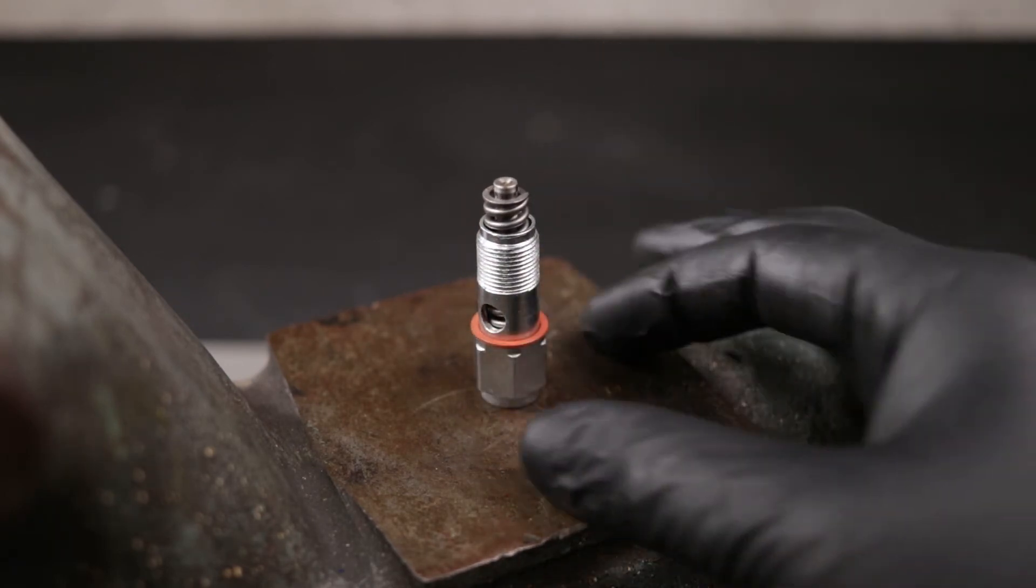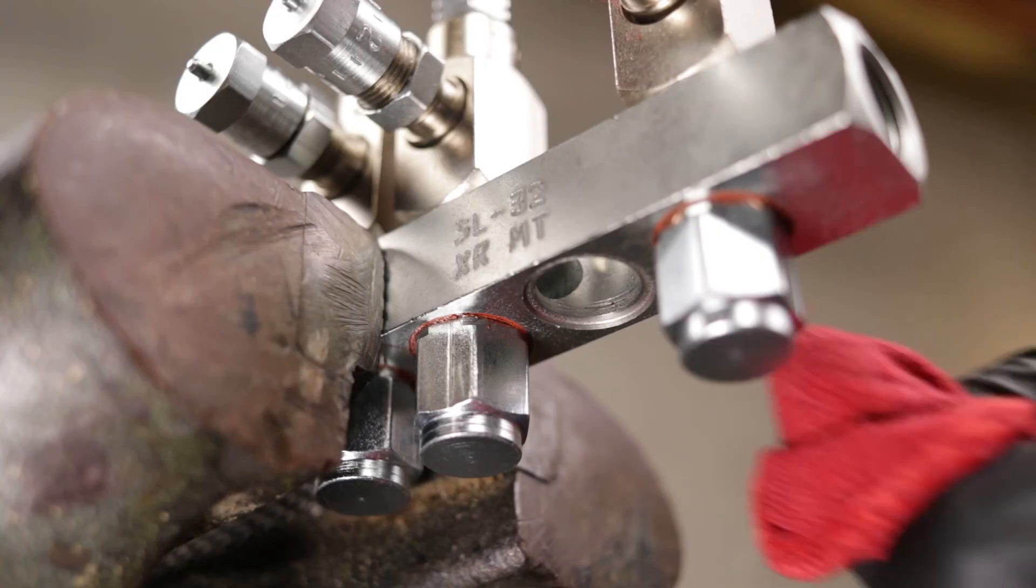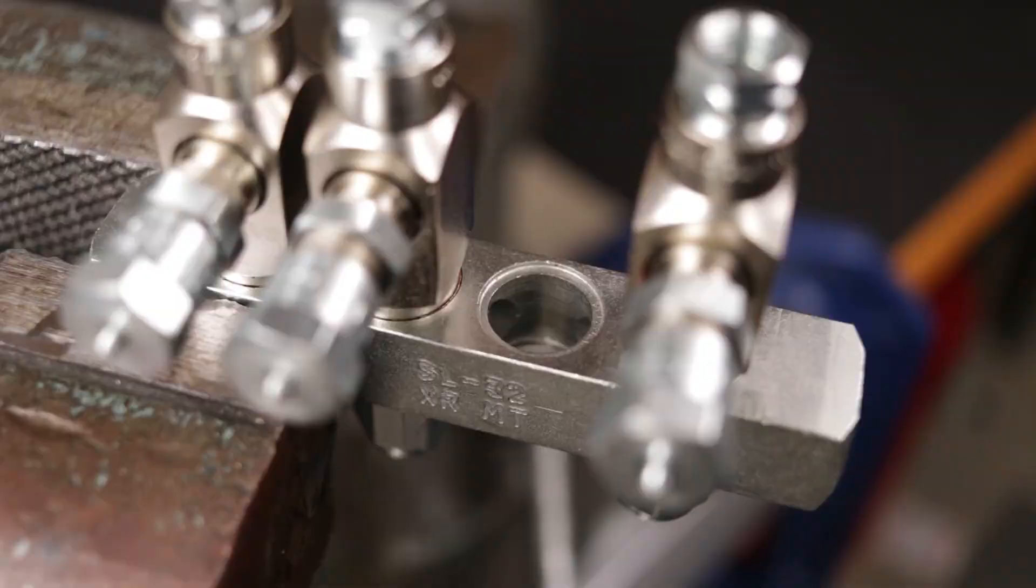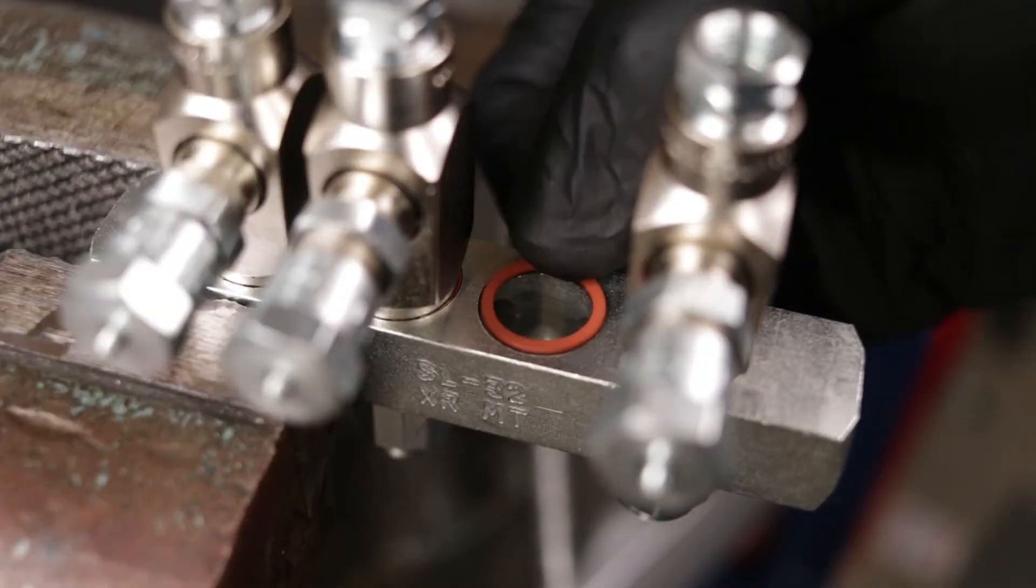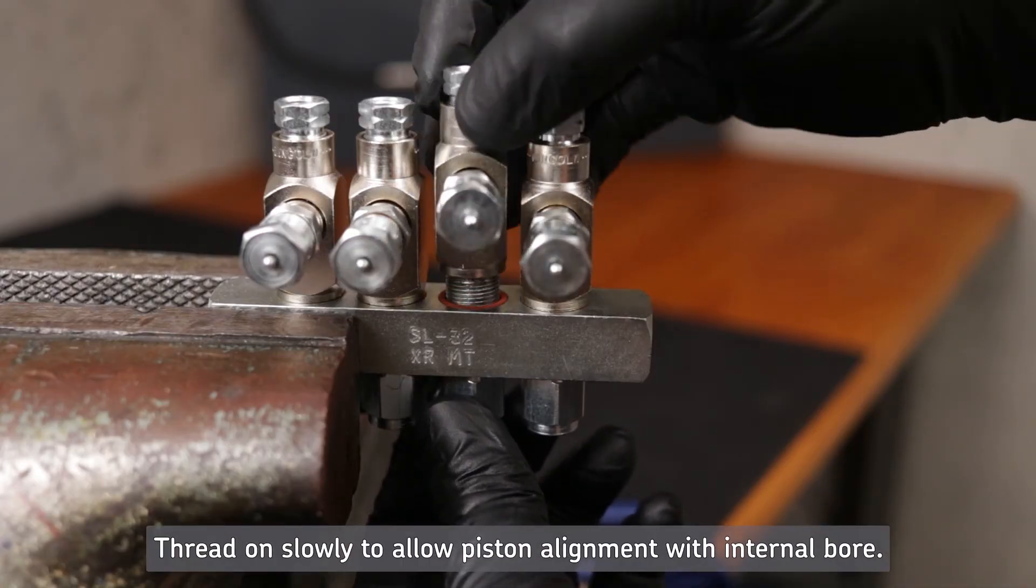This completes the assembly of the adapter and is ready for install on the injector manifold. Ensure the mating surfaces in the manifold are clean of debris and damage. Install a gasket on the top recess for sealing the injector. Insert the adapter from the bottom and thread the injector body onto the adapter threads.